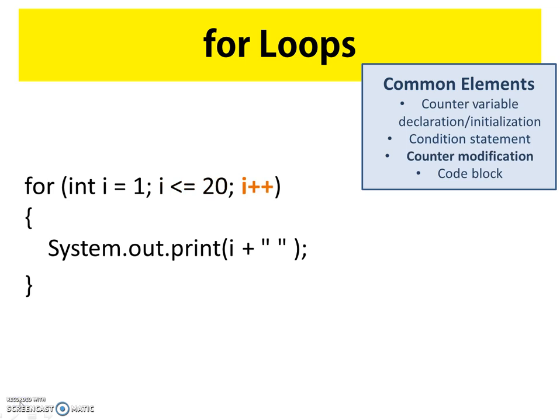The next common element highlighted is the counter modification statement, used to update the value of our variable so we can test it against our condition statement again on subsequent iterations. In our example, 'i++' means each iteration through the loop, i will be incremented by one. Typically in a for loop i is incremented by one, but the modification can be adjusted to fit your needs.